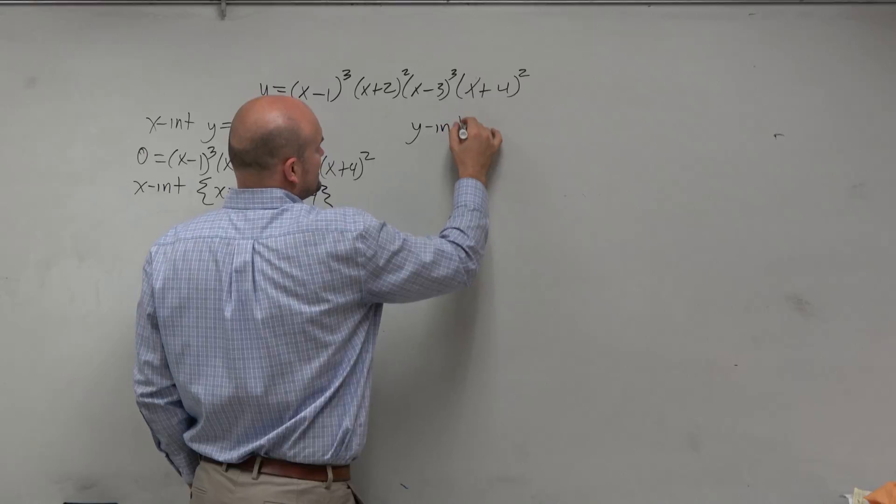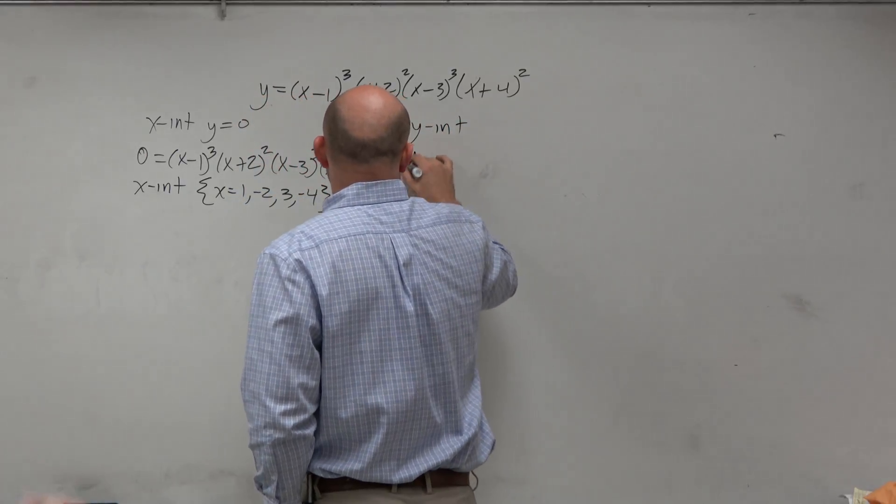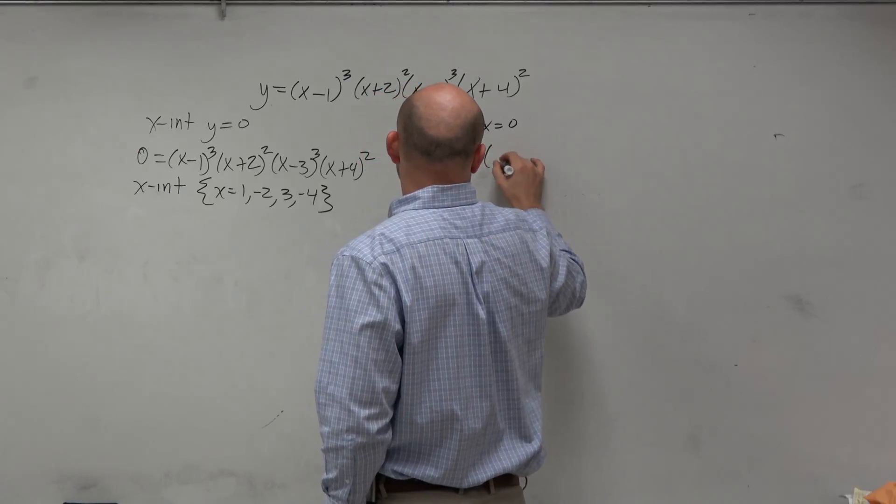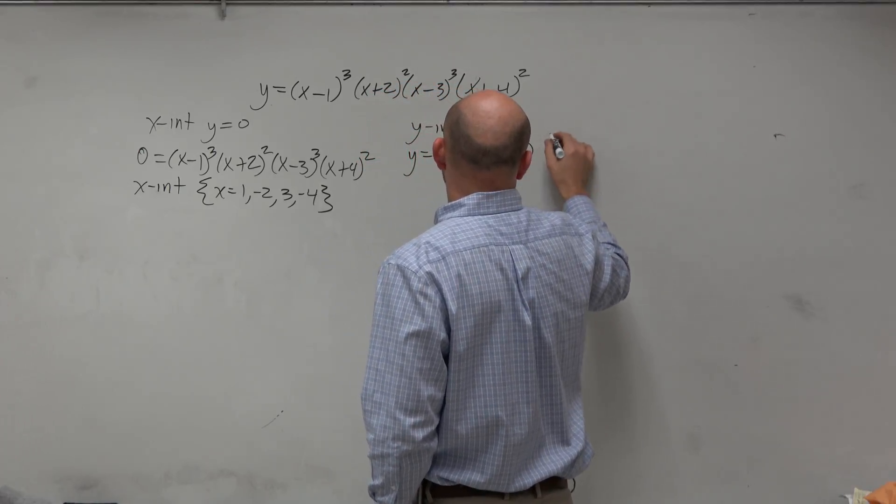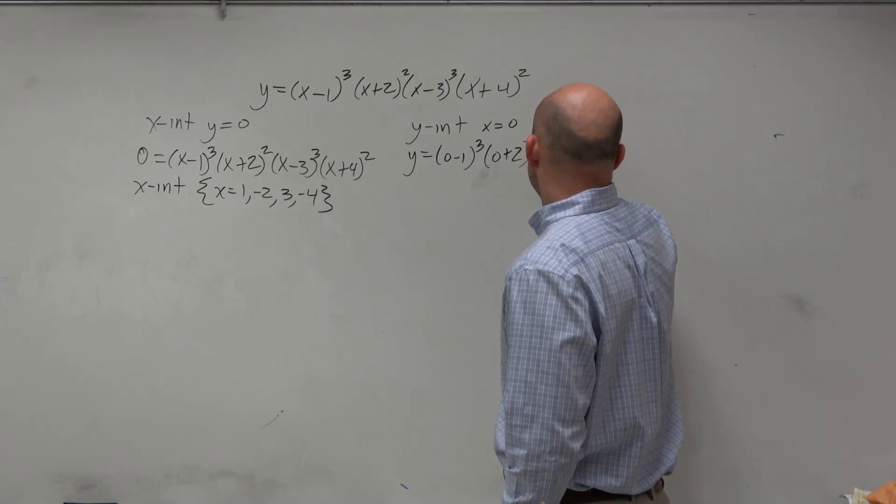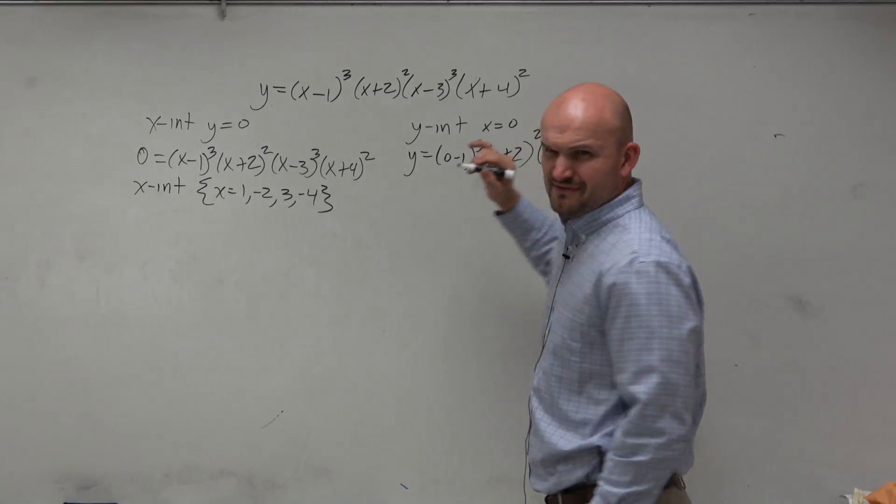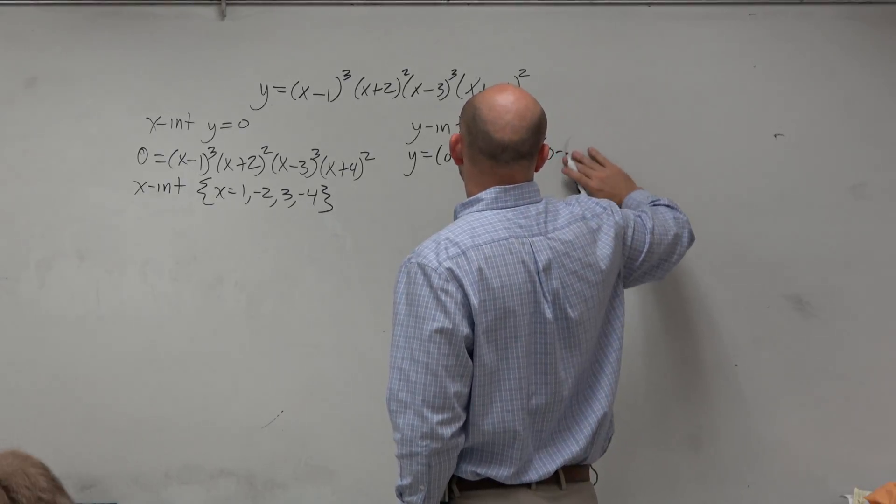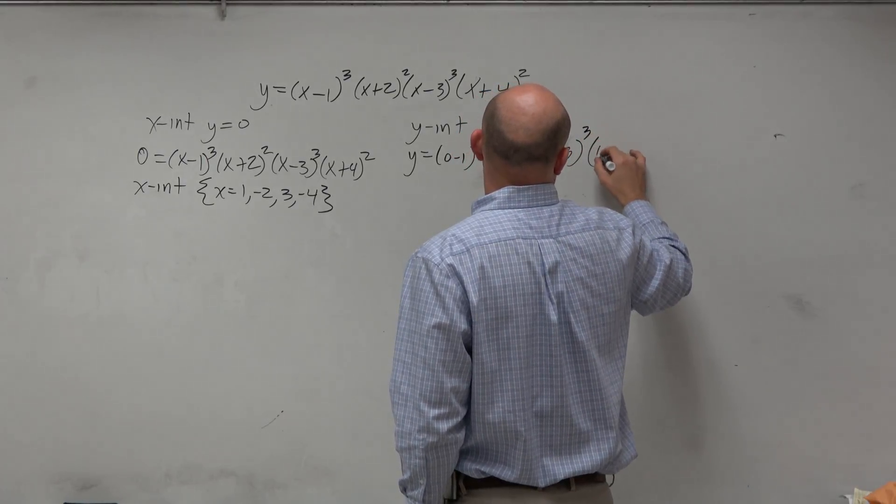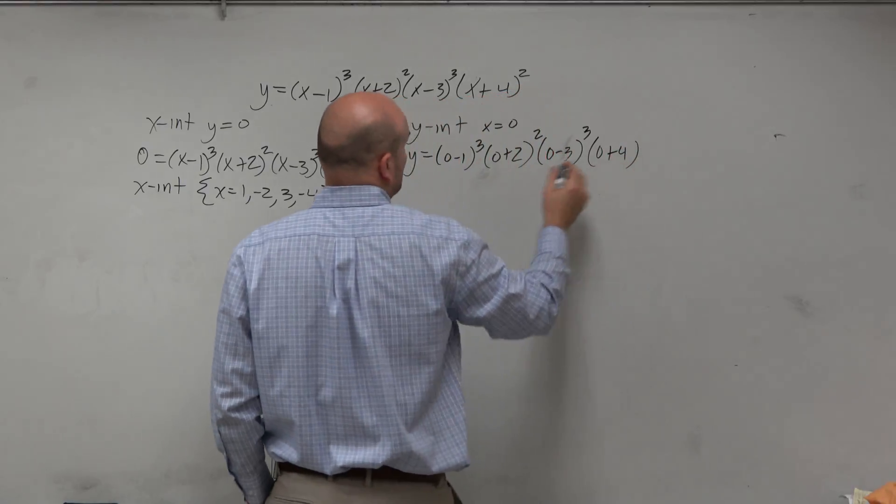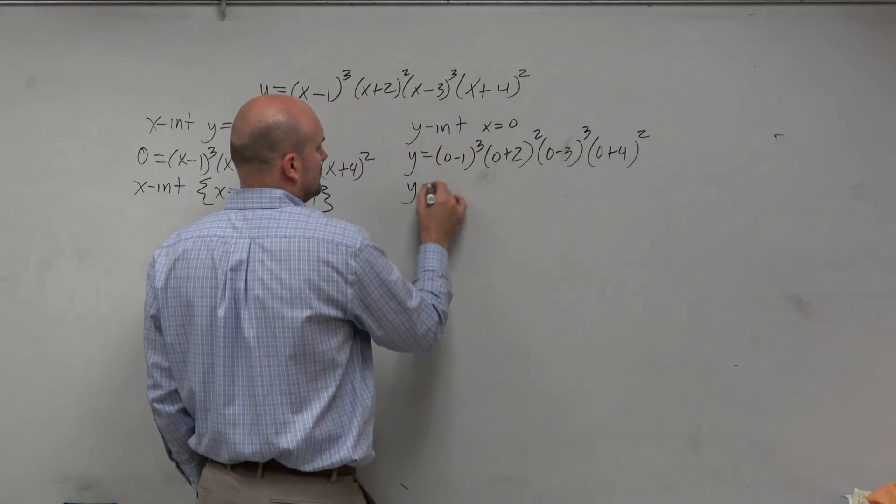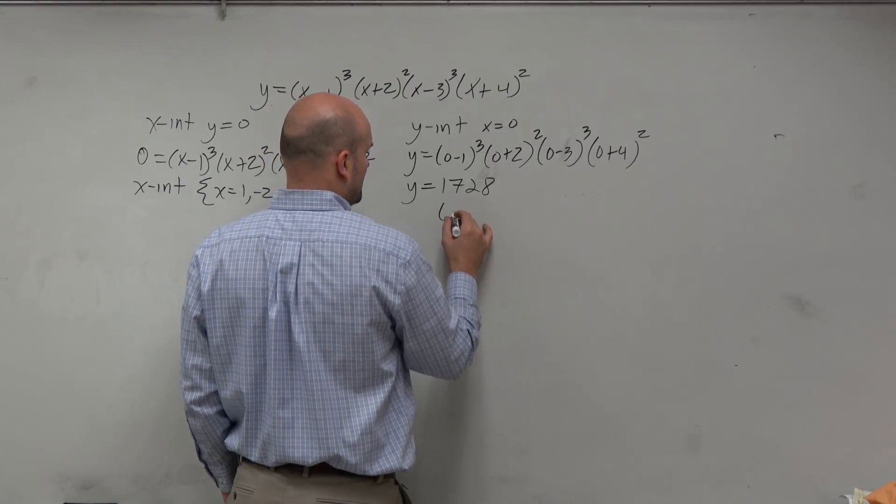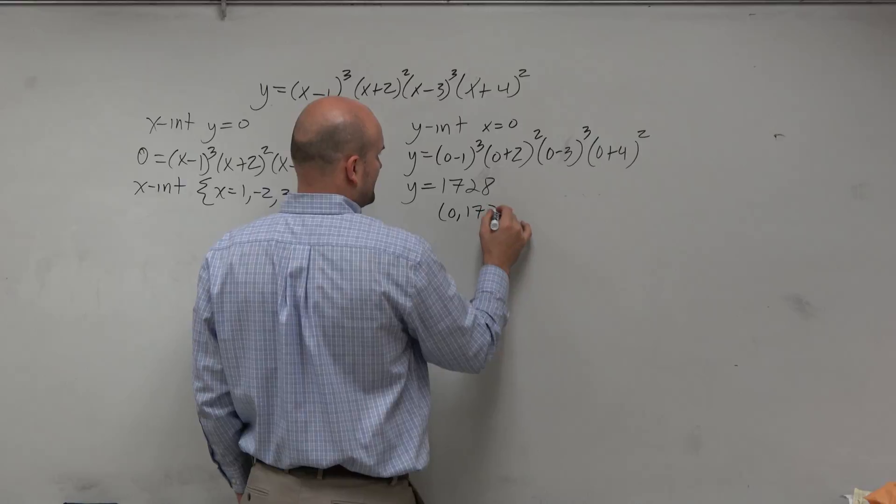If I want to find the y-intercept, now that's not as much fun, because now I'm replacing x equal to 0, and I have to do some math. And I remember when I did this, I had to use a calculator, but I forgot my calculator. So I know it's 1,728. That sounds right. Sounds about right. So therefore, that's a y-coordinate at (0, 1728).